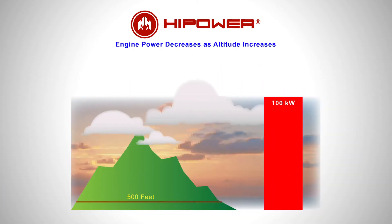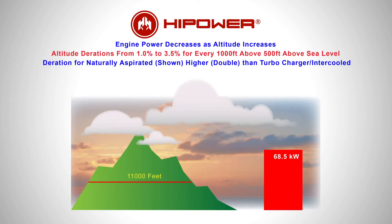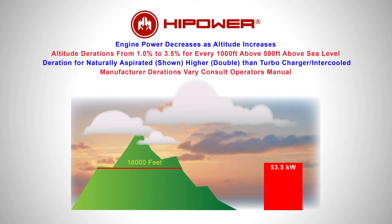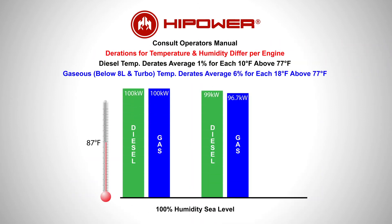Ambient conditions such as altitude, where there is less air for combustion, can reduce power, as can higher air temperatures and greater humidity. The manufacturer's derating chart should be consulted.